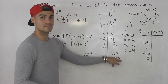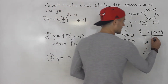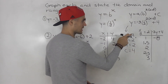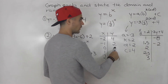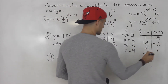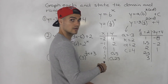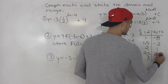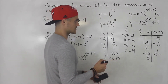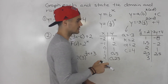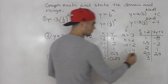Then transform the y values by multiplying by negative three and adding four. So: four times negative three is negative twelve plus four equals negative eight; two times negative three is negative six plus four equals negative two; one times negative three plus four equals positive one; 0.5 times negative three is negative 1.5 plus four equals 2.5; and negative three times 0.25 is negative 0.75 plus four equals 3.25.